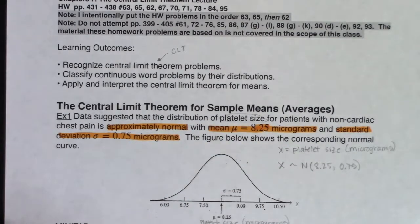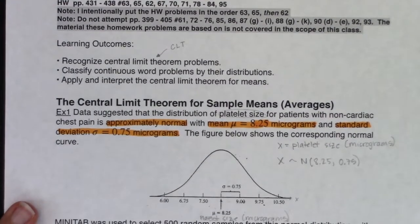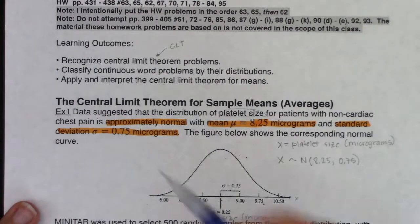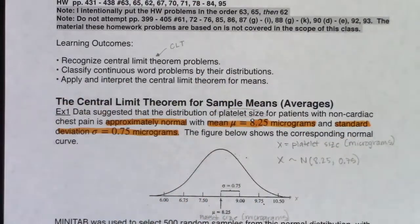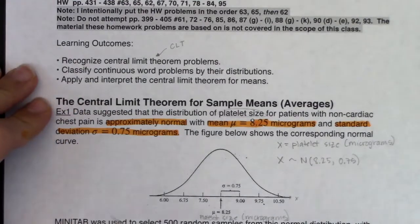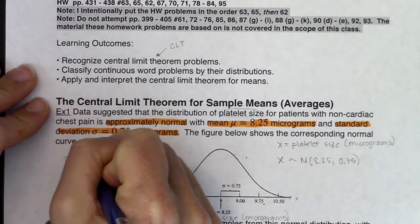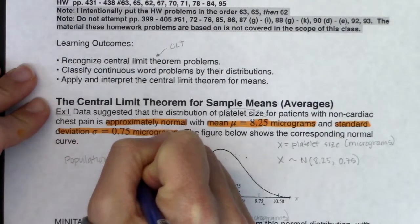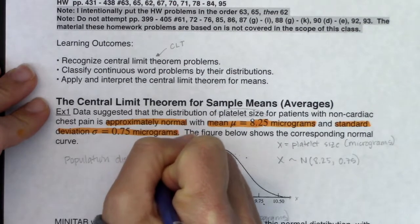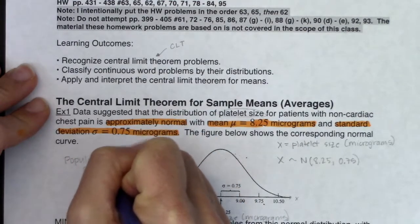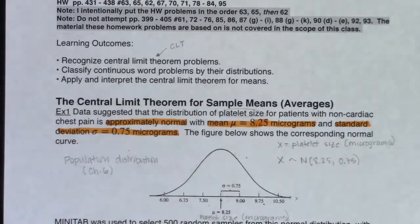If there was a y-axis label, it would be probability — but we don't have the calculus for that. I want to reiterate: this is what we call the population distribution. These are all the graphs we made in Chapter 6 — all of these non-cardiac chest patients. And then we're going to switch over to something called sampling distributions.